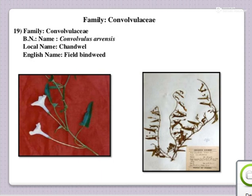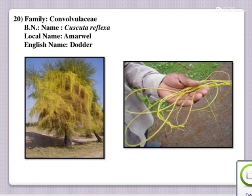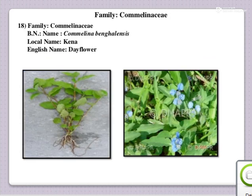The next one is Sandevail Field; English name is Field Bindweed; botanical name is Convolvulus arvensis; family Convolvulaceae. Then this is Amurvel — it is a parasitic weed; Cuscuta — this is a partial parasite; Cuscuta reflexa; family Convolvulaceae.